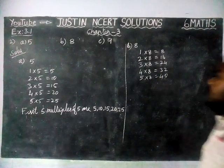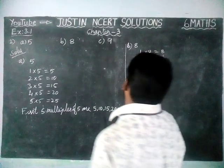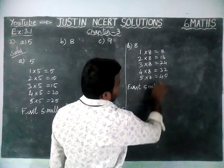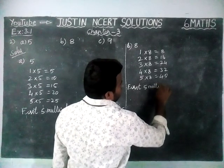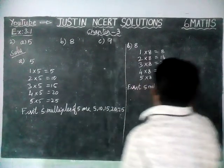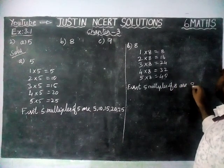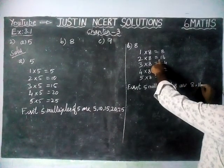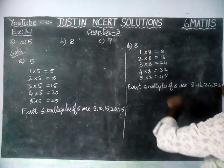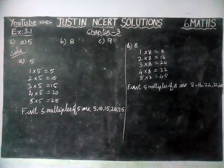Therefore, the first 5 multiples of 8 are: 8, 16, 24, 32 and 40.